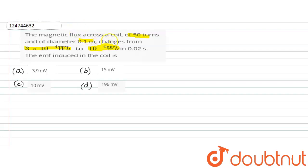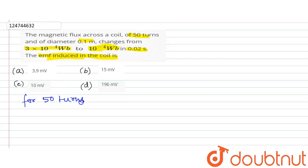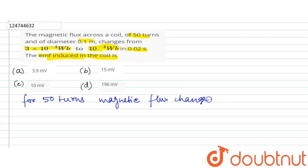Now the question states the time interval is 0.02 seconds. We need to find the number of turns and the induced EMF. Let's start with the question and find the induced EMF. For 50 turns, what is the magnetic flux change? The magnetic flux change — let's define dφ.